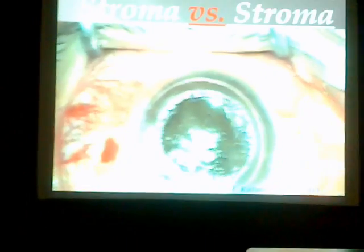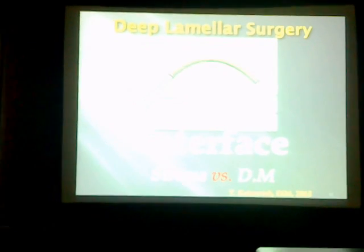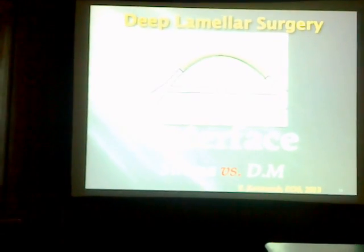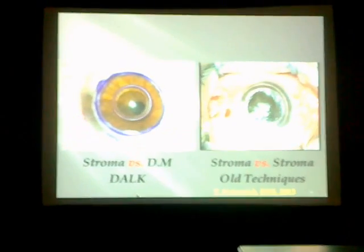The problem of lamellar surgery in the past was the interface. At that time, the interface was between stroma and stroma — somewhat rough, as seen in this video. But now, with deep anterior lamellar keratoplasty, the interface is between the stroma and the Descemet's membrane, and as you see, it's a perfect, clean interface. To compare: stroma versus stroma versus stroma versus Descemet's membrane.